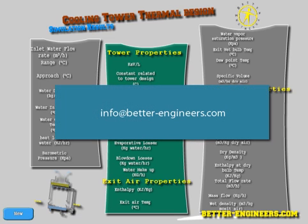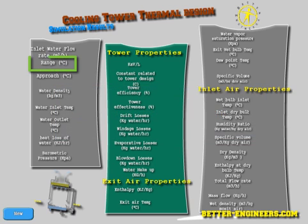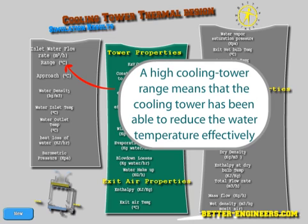If you have any questions, please contact us at info@better-engineers.com. The range is a common unit used in cooling tower sizing, which is basically the difference between the hot water temperature and the cold water temperature. A high cooling tower range means that the cooling tower has been able to reduce the water temperature effectively.